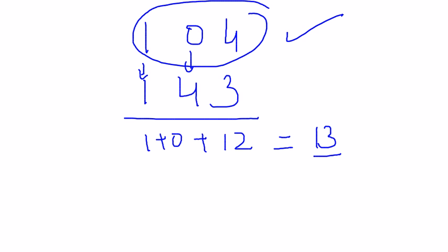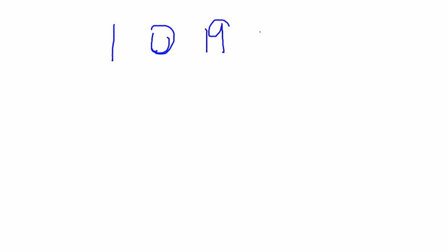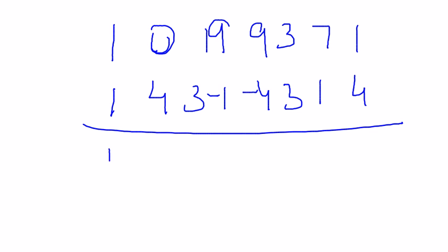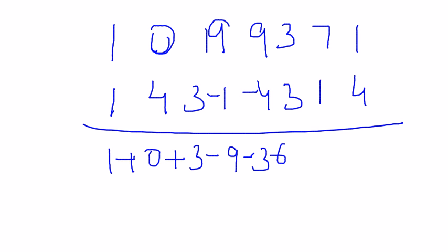Now let's take another example. This time the number is 1993710 (7 digits). I'll write out the pattern: 1, 4, 3, minus 1, minus 4, 3, again 1, 4. Now: 1 cross 1 gives 1, 4 cross 0 gives 0, 3 cross 1 gives 3, minus 1 cross 9 gives minus 9, minus 4 cross 9 gives minus 36, plus minus 3 cross 3 gives minus 9.